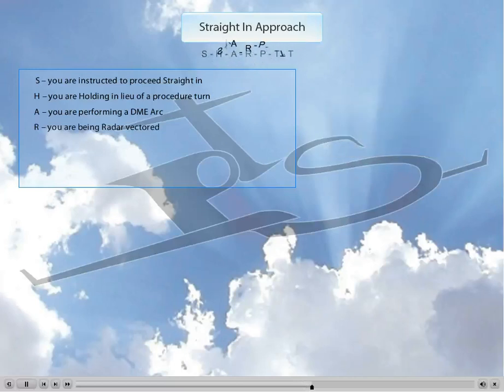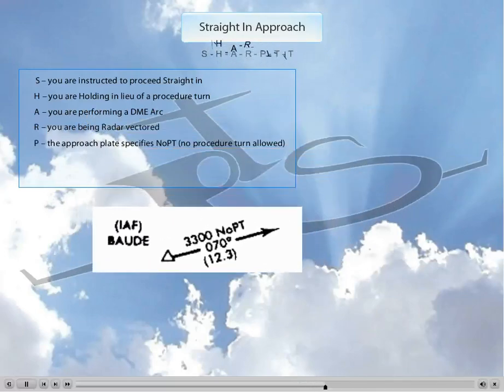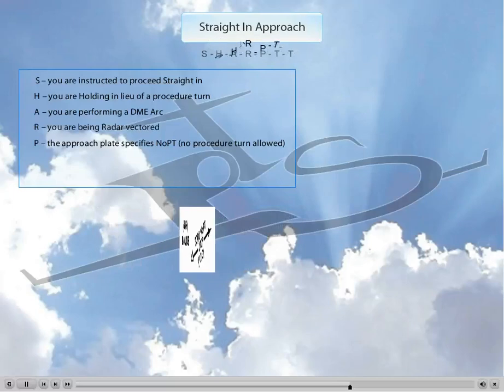The P stands for No Procedure Turn. As you see in the figure, if there is from a feeder route or from some other place that you're coming from to the final approach course, if it says on it 'No PT,' it obviously means do not do a procedure turn, so you would proceed straight in.